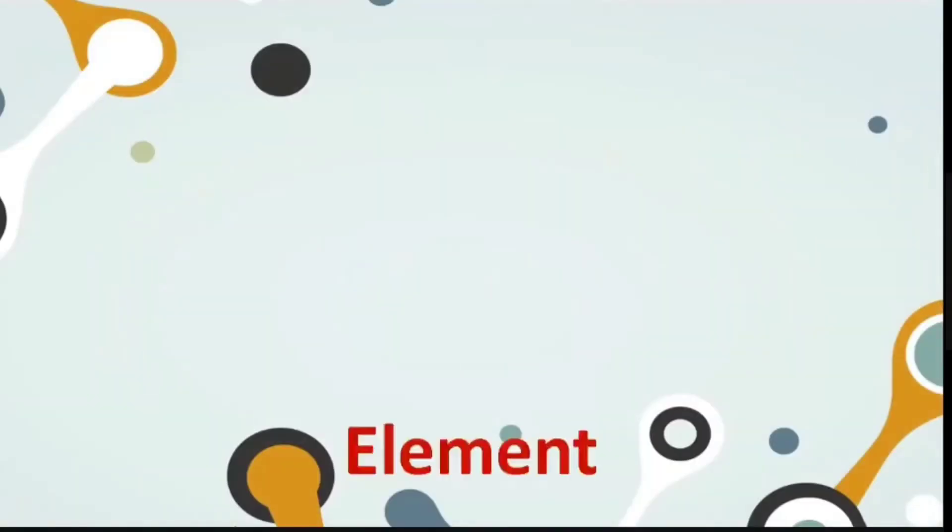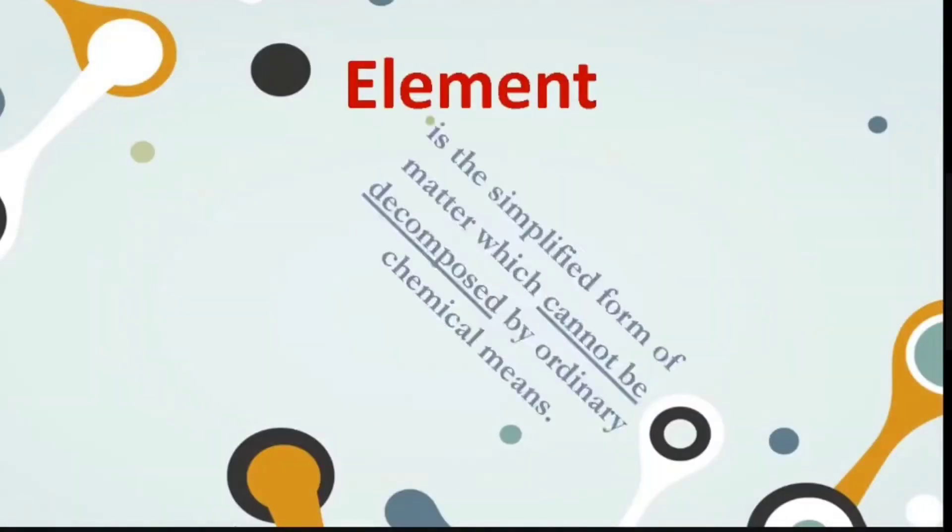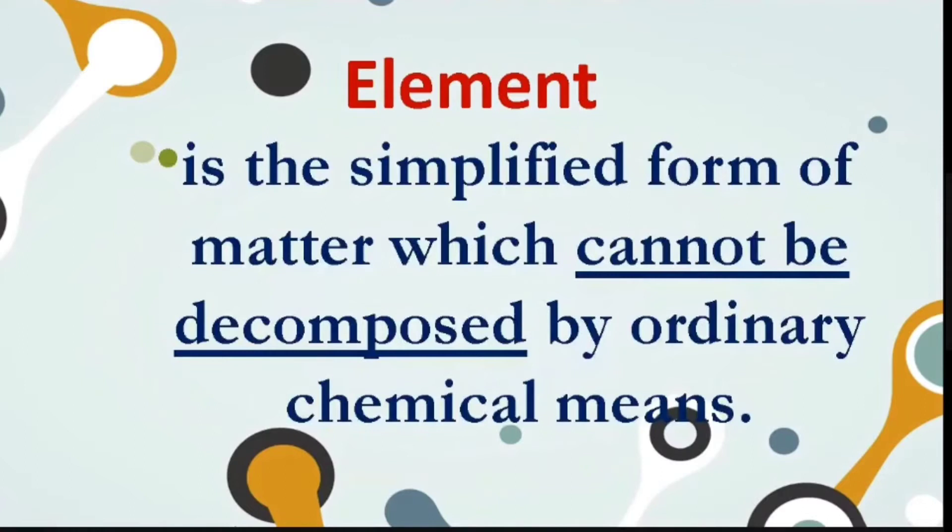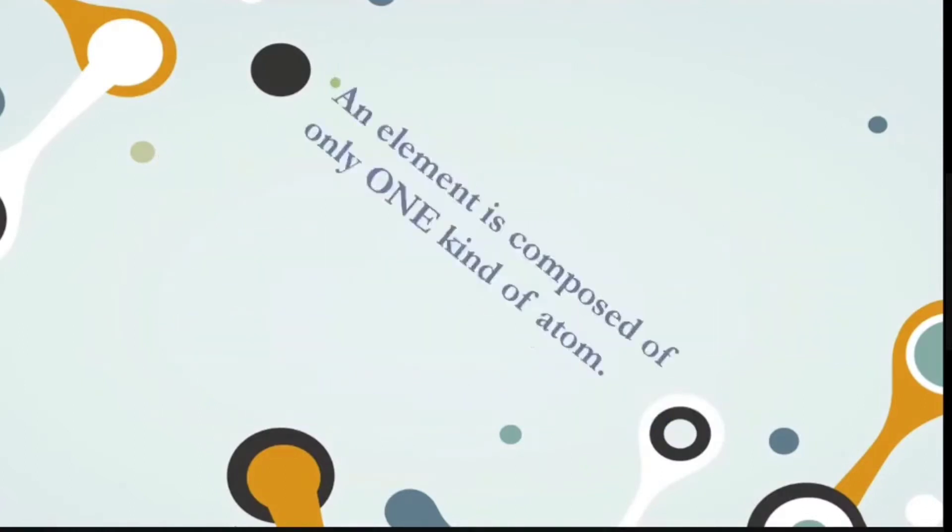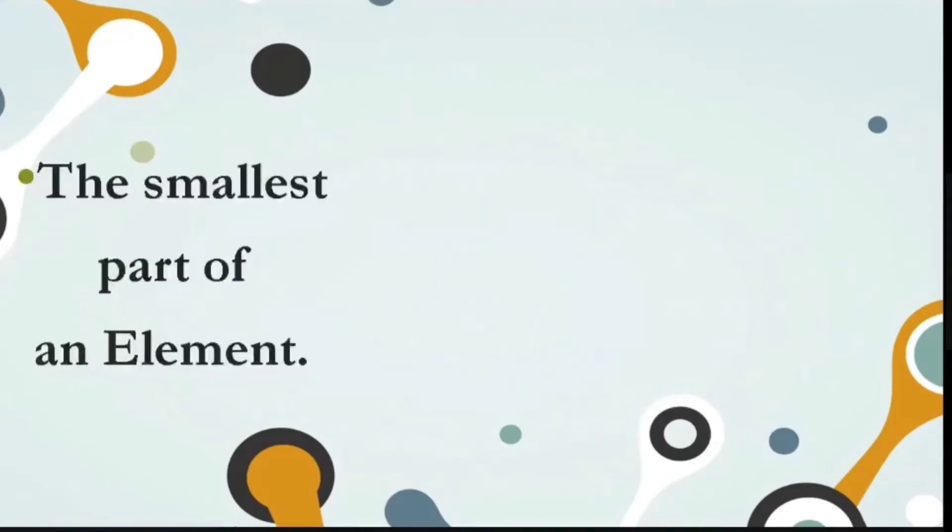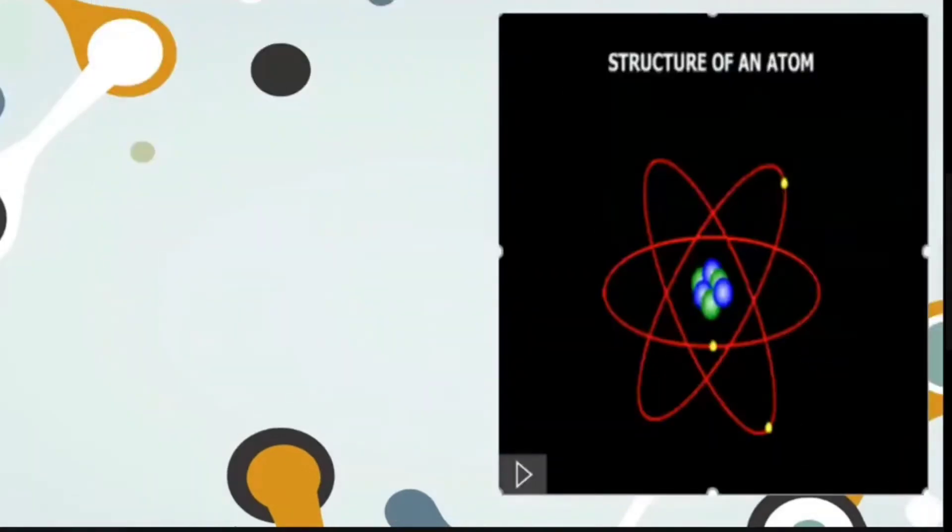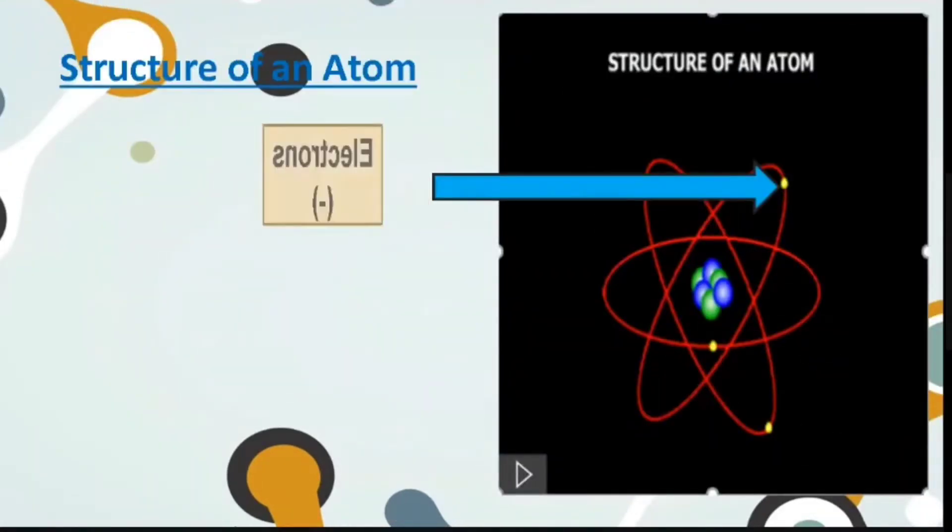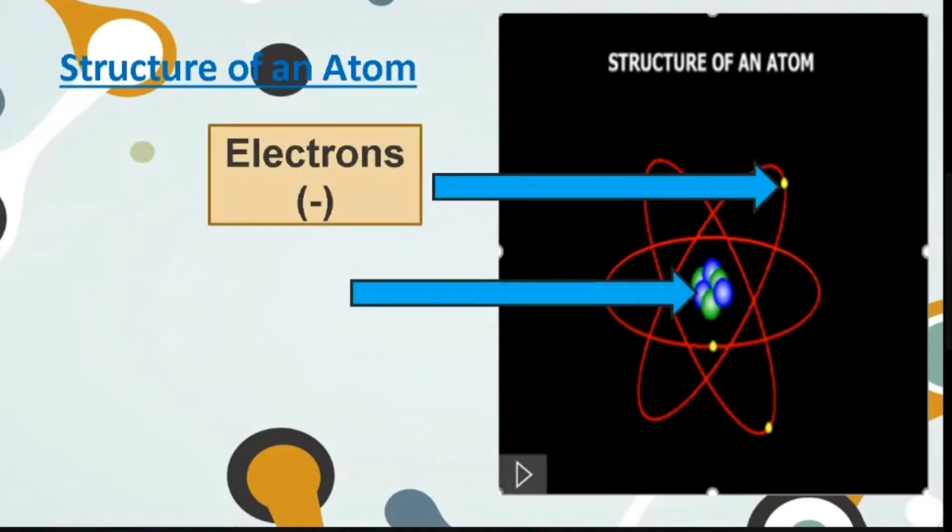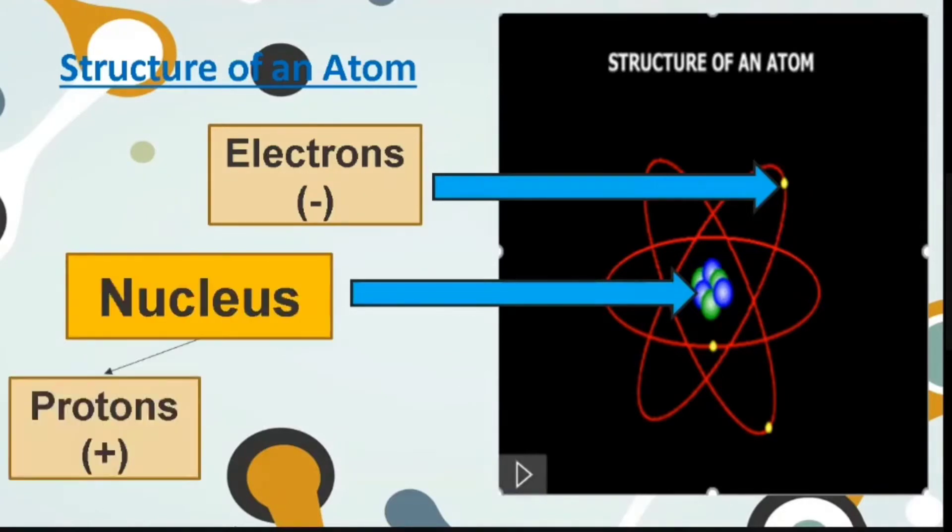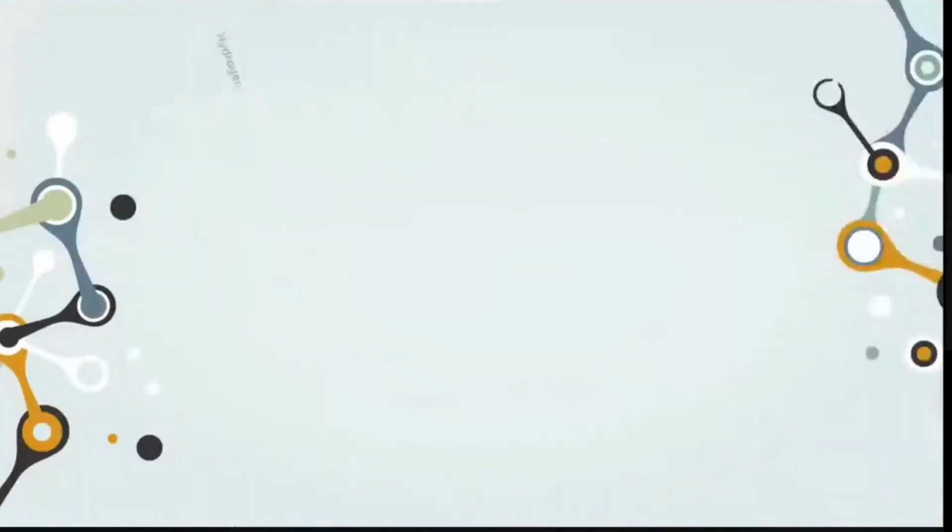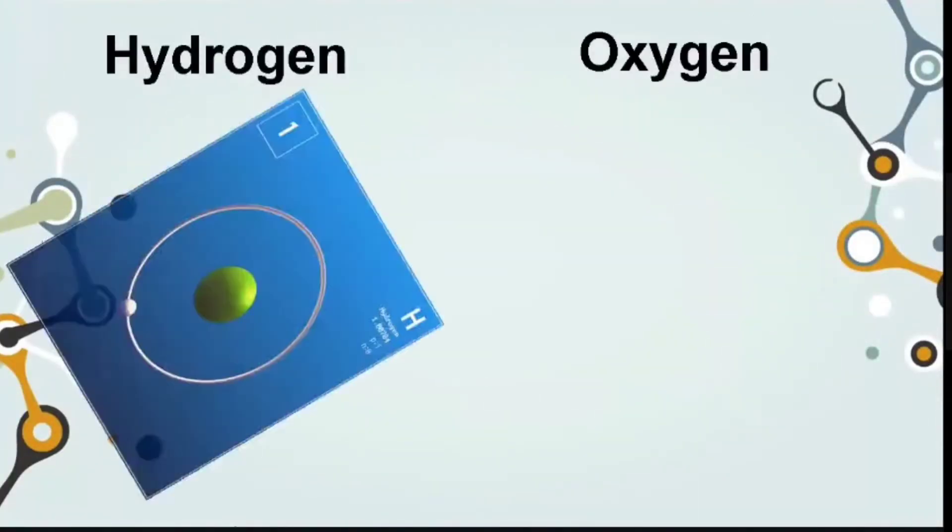An element is the simplified form of matter which cannot be decomposed by ordinary chemical means. It contains only one kind of atom. An atom is the smallest part of an element. It is made up of three subatomic particles: electrons, the negatively charged, found orbiting around the nucleus of an atom. An atom has a nucleus where the protons, positively charged, and neutrons are found.